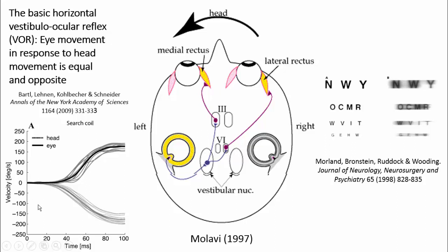Here on the left-hand side we have a VOR trace using search coils, showing the eye in black and the head in grey. What you can see over time, in terms of velocity, is that as the head moves in one direction the eyes move in the other direction, equal and opposite. The sum of those two lines should be a straight line because the eye movement should exactly cancel out the head movement.